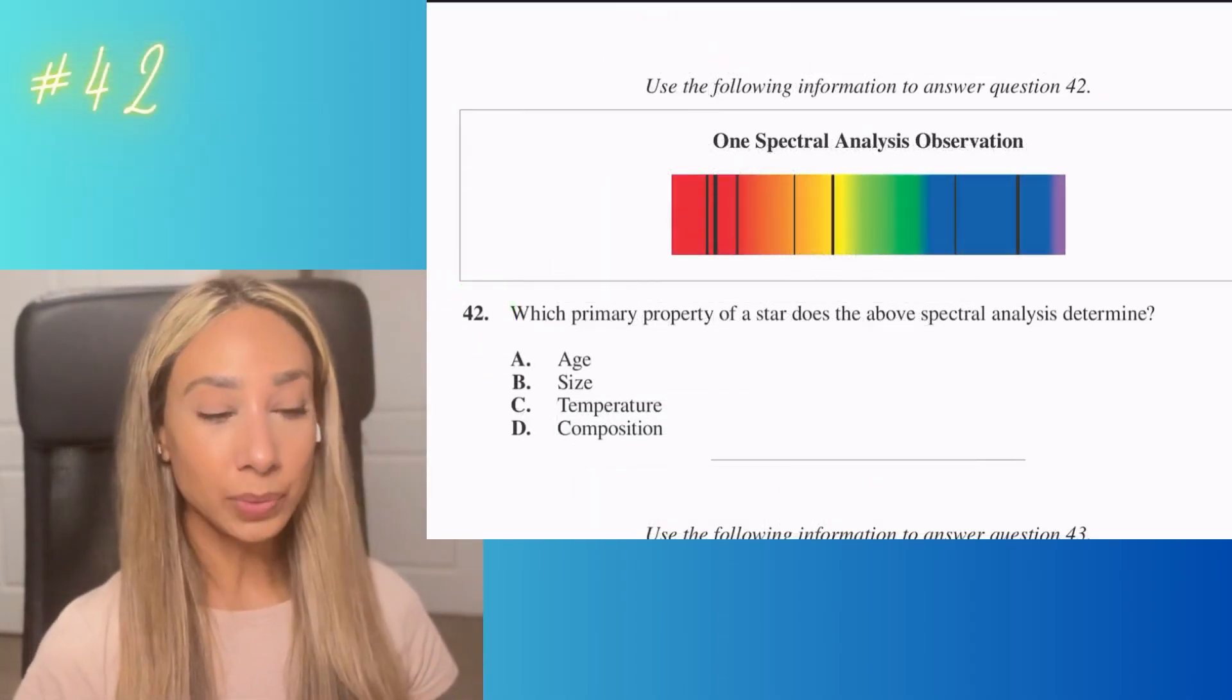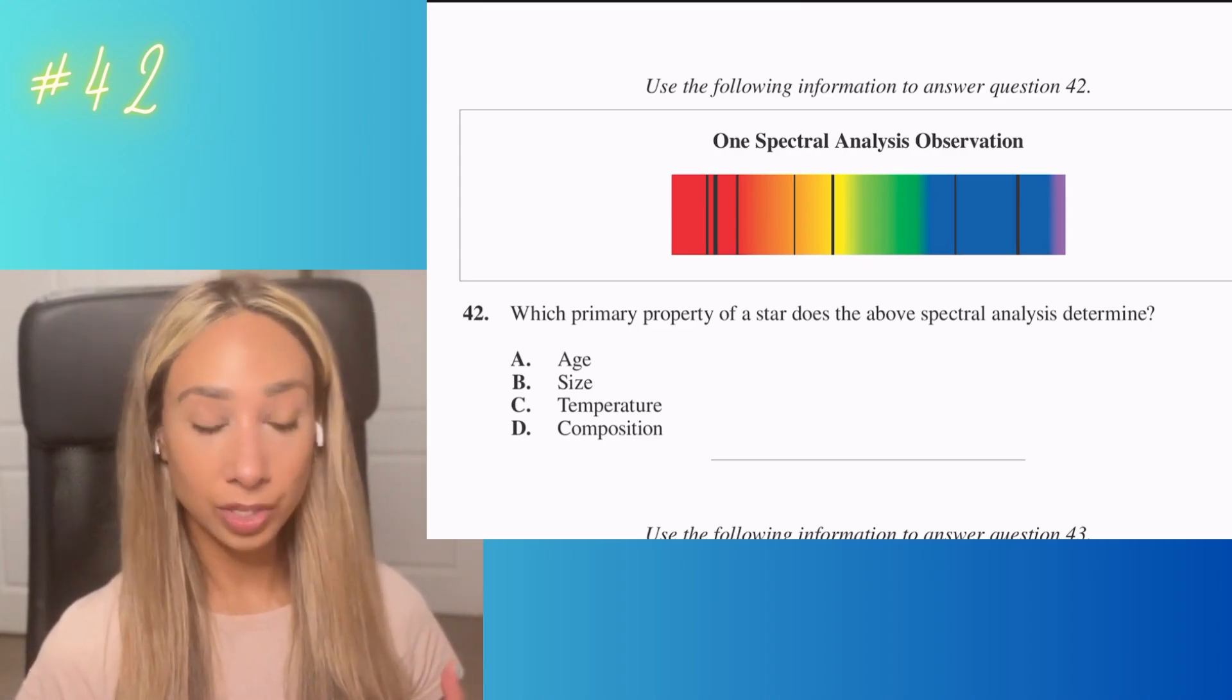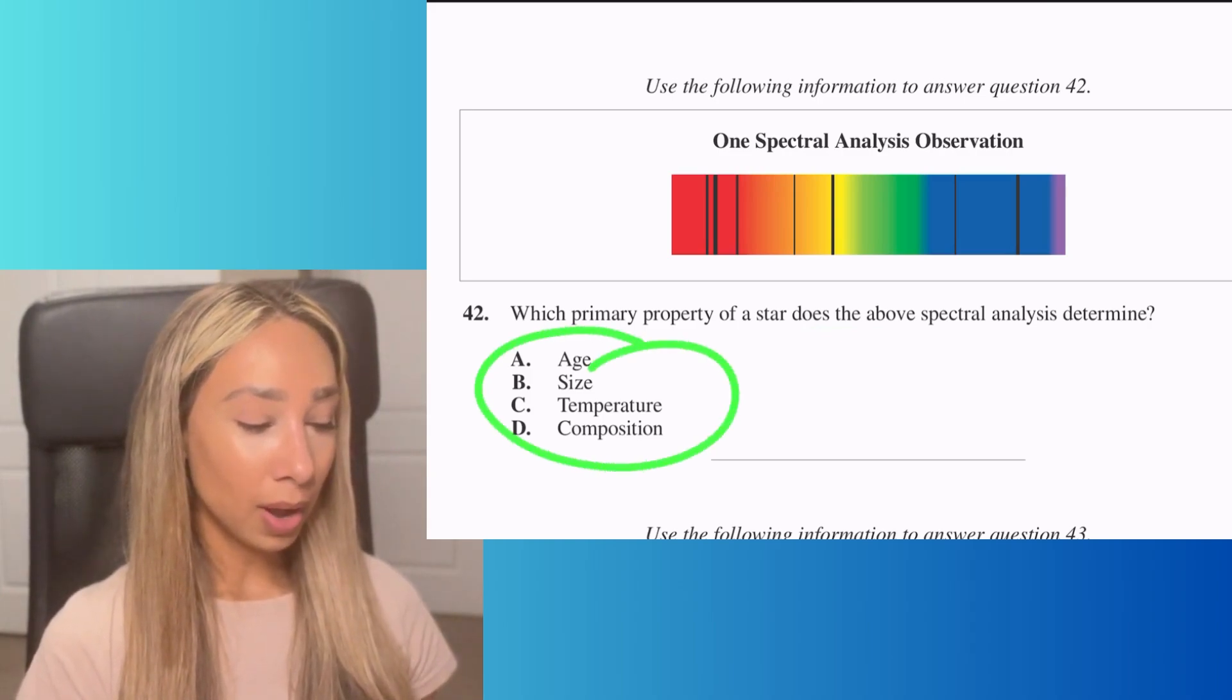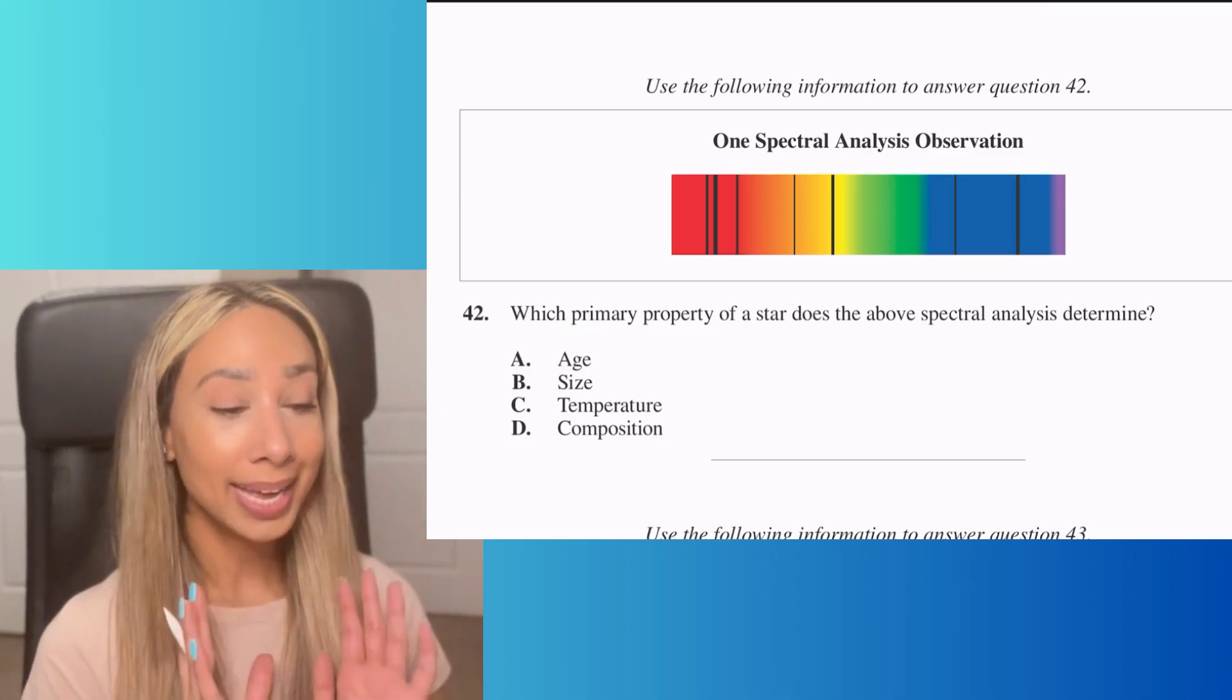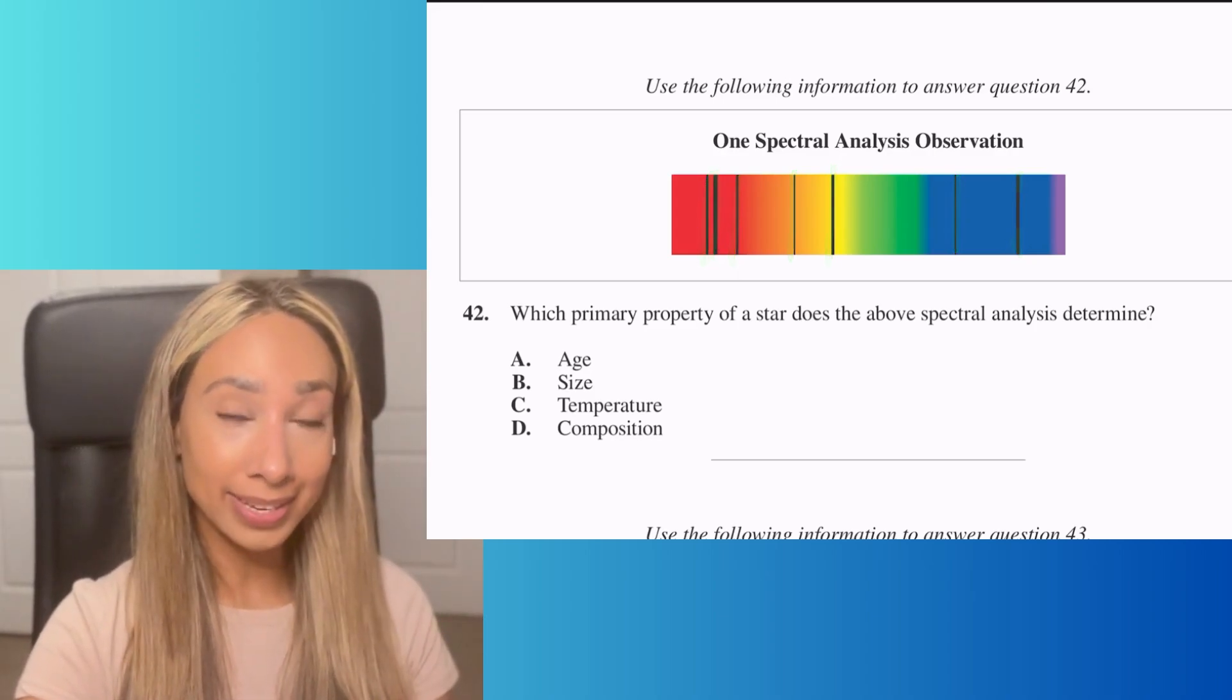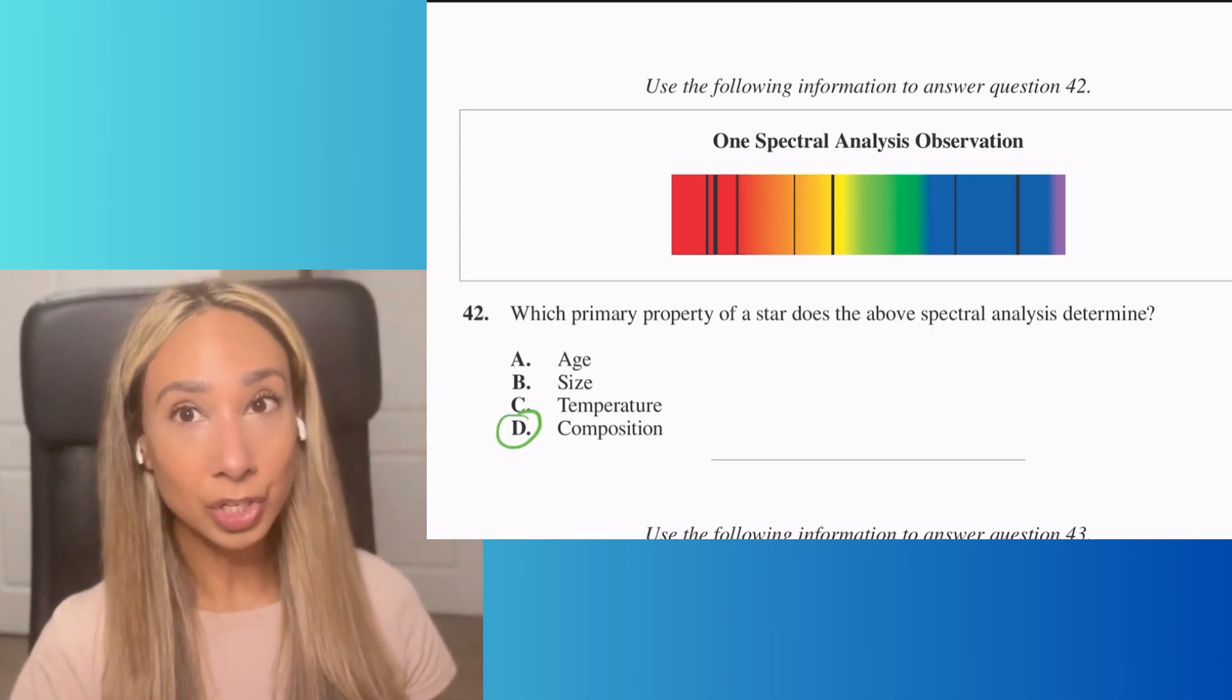Number 42. We're looking at spectral analysis. It's tempting to think about redshift and blueshift here, but that's about distance. The primary property this spectral analysis is determining—I notice these lines indicate where an element would fall on this analysis. If we're thinking about elements, we're thinking about what the planet is made of. The answer is D, the composition of the planet.